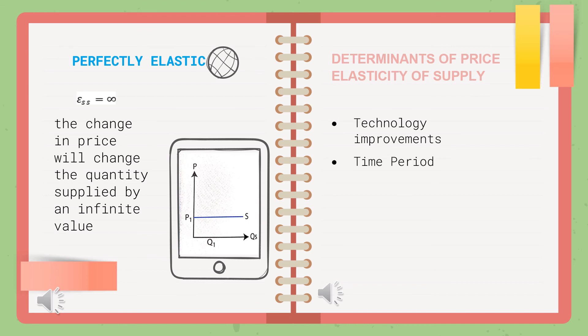The second determinant is time period. In the short run, supply will be more inelastic because quantity supplied is limited. However, in the long run, supply becomes more elastic. For example, supply of rice will be inelastic in the short run because farmers have to wait a long time to produce rice. But in the long run, once farmers have had enough time to harvest and create more rice paddy fields, supply will become elastic.